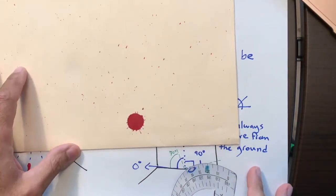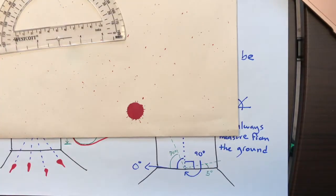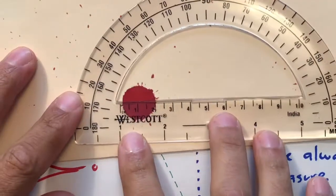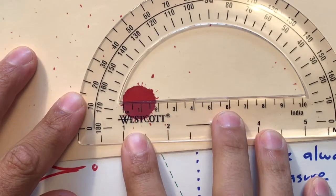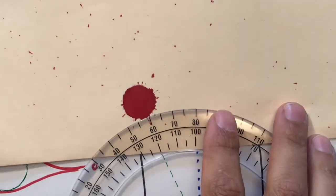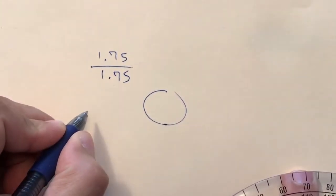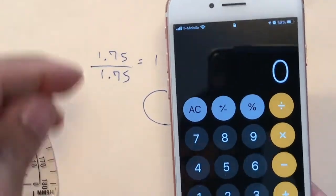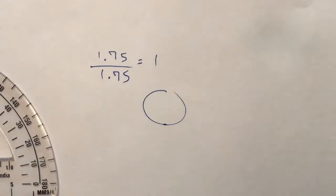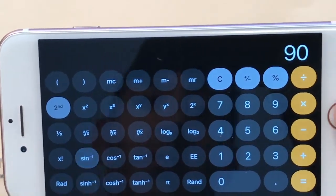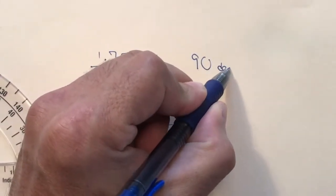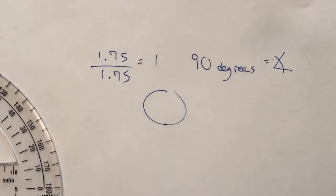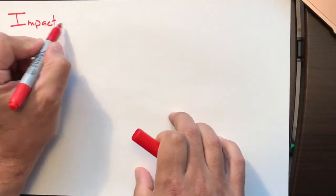Here's another drop with very little circular distortion. Measuring it: width is 1.75 cm and length is also 1.75 cm, giving 1.75 ÷ 1.75 = 1. The inverse sine of 1 is 90 degrees. What does 90 degrees mean? It means gravity pulled it straight down with no other directional factors — no angle whatsoever.